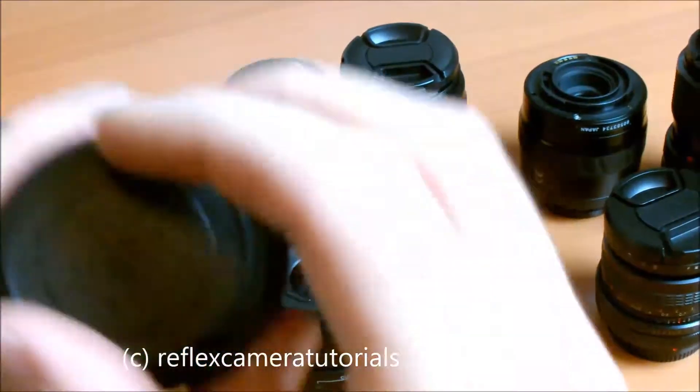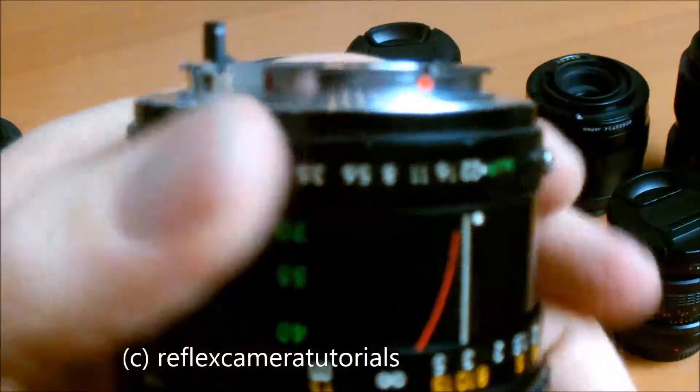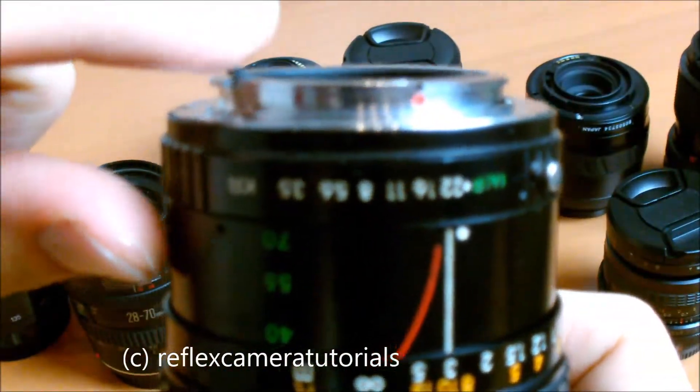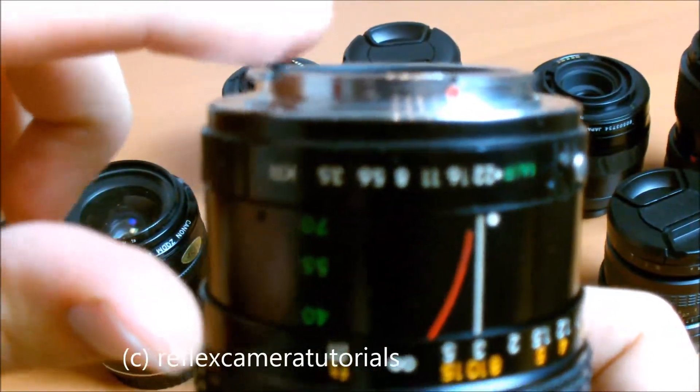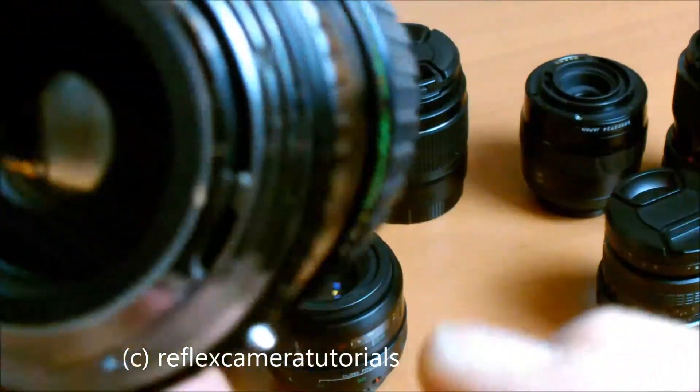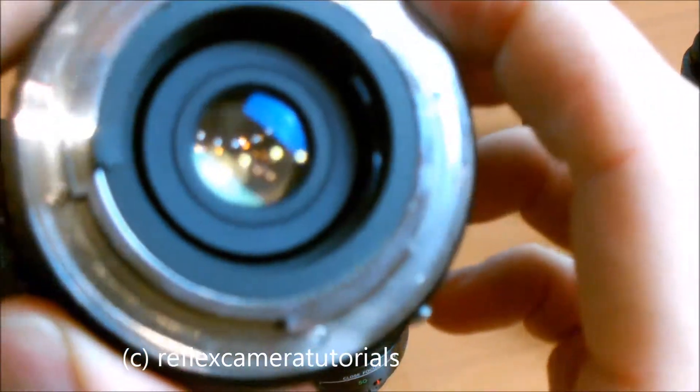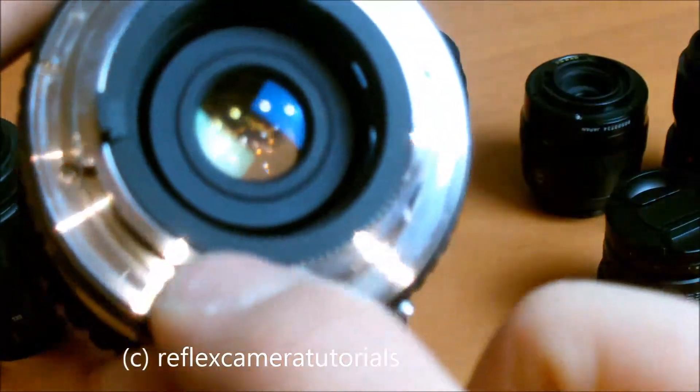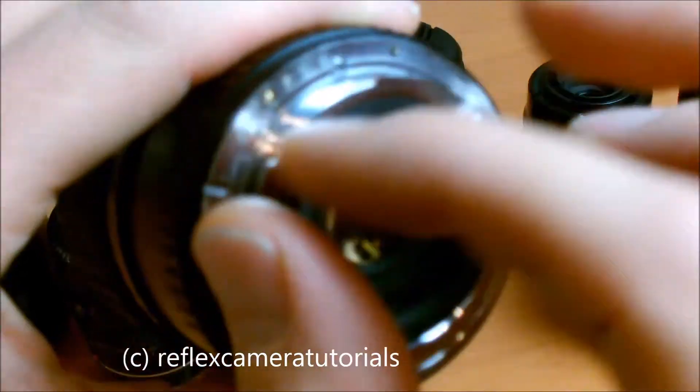Then we have here a PK mounting which is quite easy to see because it has this high standing switch also for the aperture. And you can see here, this is not easy to see, but here are balls for easier turning.